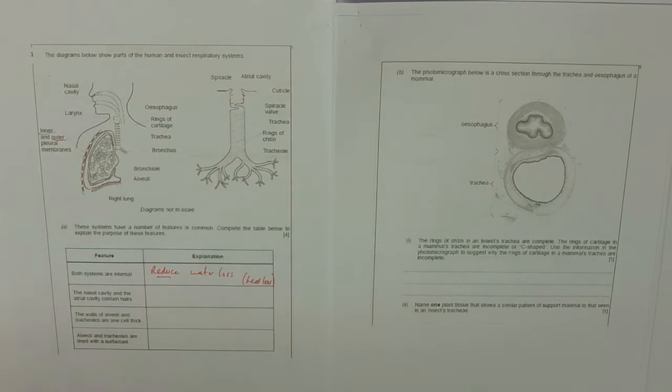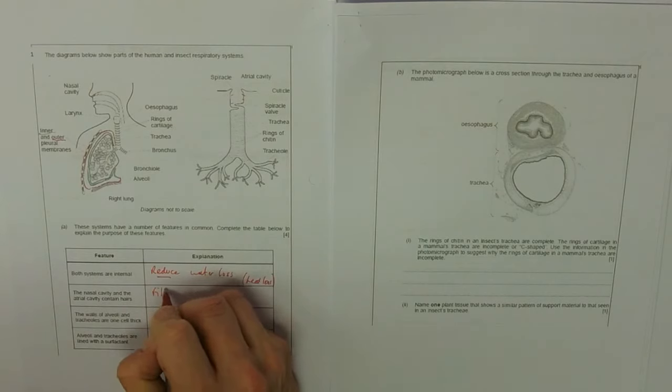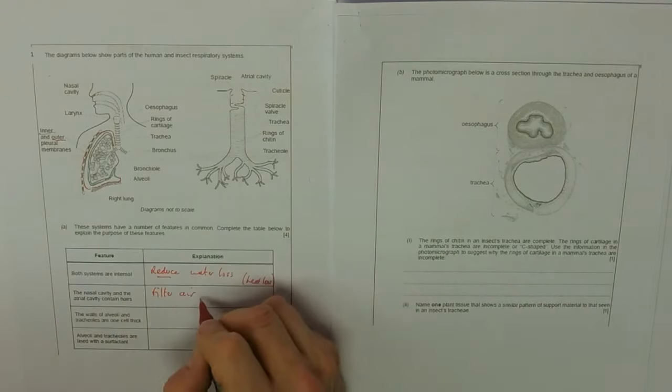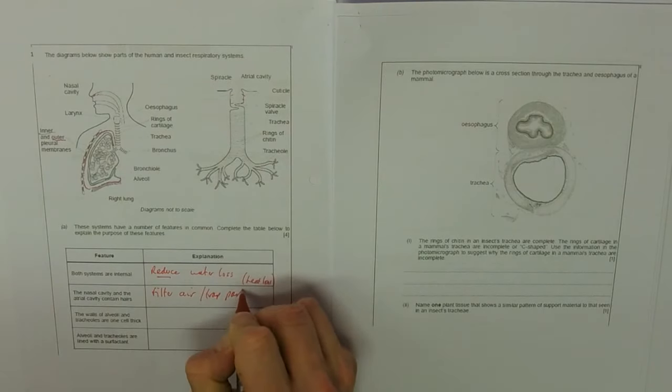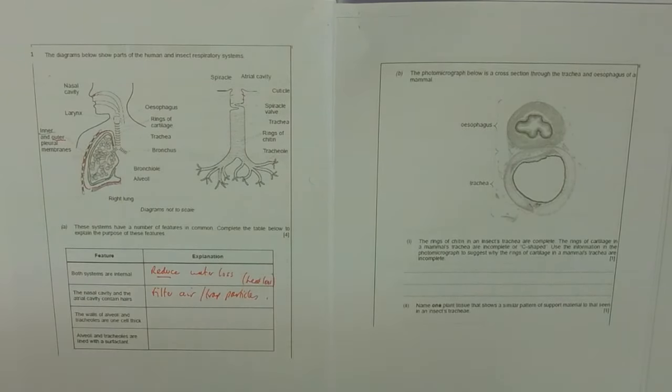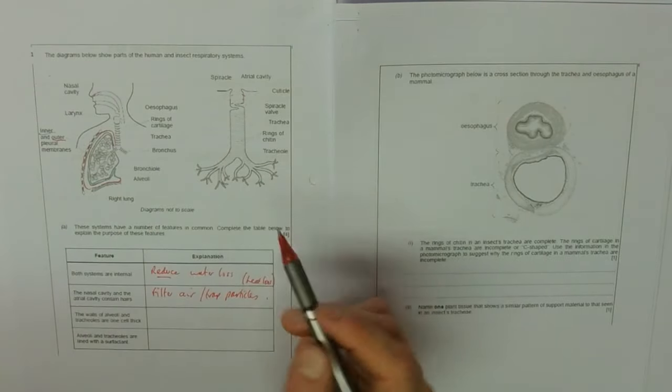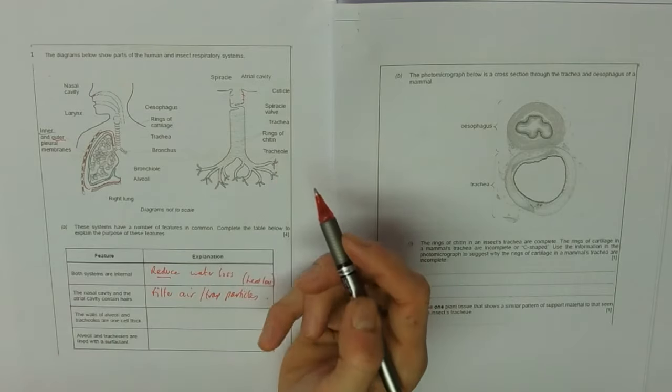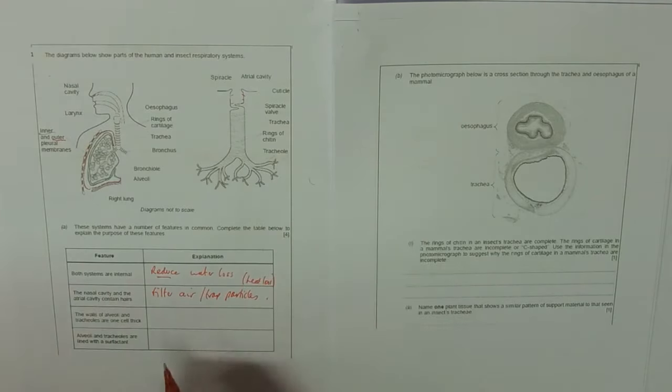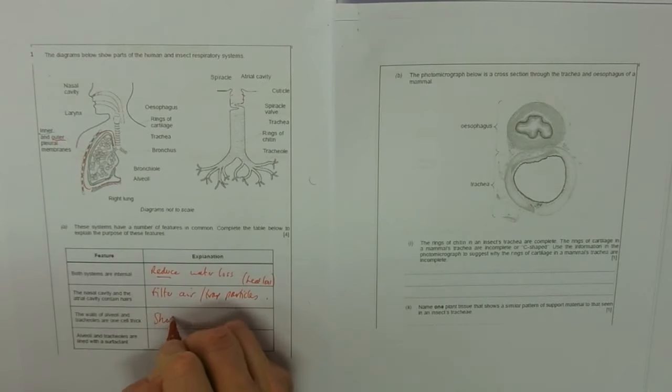The walls of the alveoli and tracheals are one cell thick. This is your properties of exchange surfaces. The walls of the alveoli and tracheals right at the end are very thin, just to create a short diffusion distance, short diffusion path for respiratory gases.